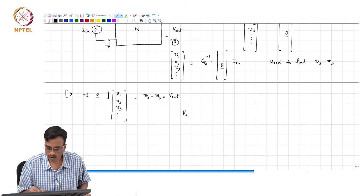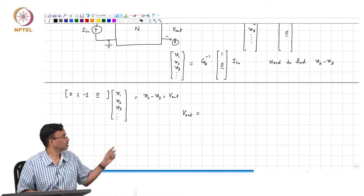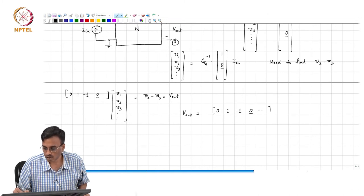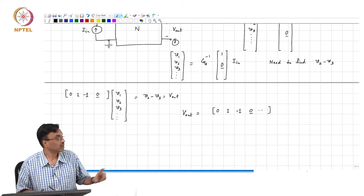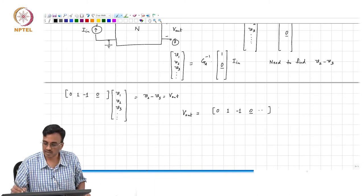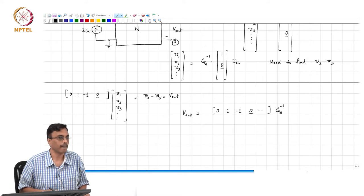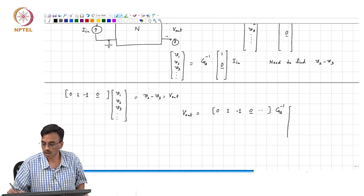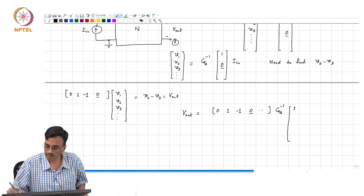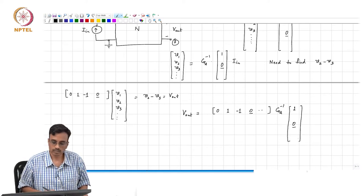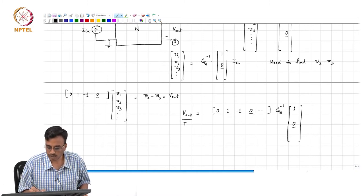Does it make sense people? So what is V_out? Putting these two equations together, it is simply nothing but [0 1 -1 0...] times V1, V2, V3, blah blah blah. And what is that? It is G_A inverse times [1 0...0] times I_in. So if I bring I_in out here, the transfer function from I_in to V_out is basically of this form.